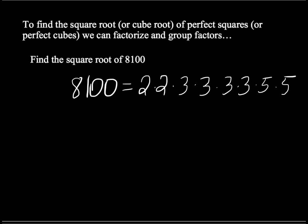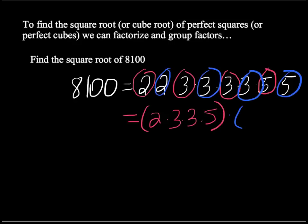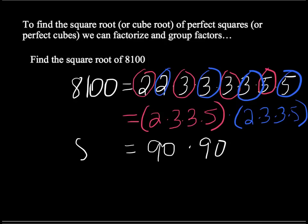8,100 is 2 times 2 times 3 times 3 times 3 times 3 times 5 times 5. I'm going to take one group and set it aside: that's 2 times 3 times 3 times 5. And a matching set of factors is 2, 3, 3, and 5, of course. So we have 2 times 3 times 3 times 5. If you work that out, you'll discover that 2 times 3 times 3 times 5 is 90. So in fact we have 90 times 90, and therefore the square root of 8,100 is 90.